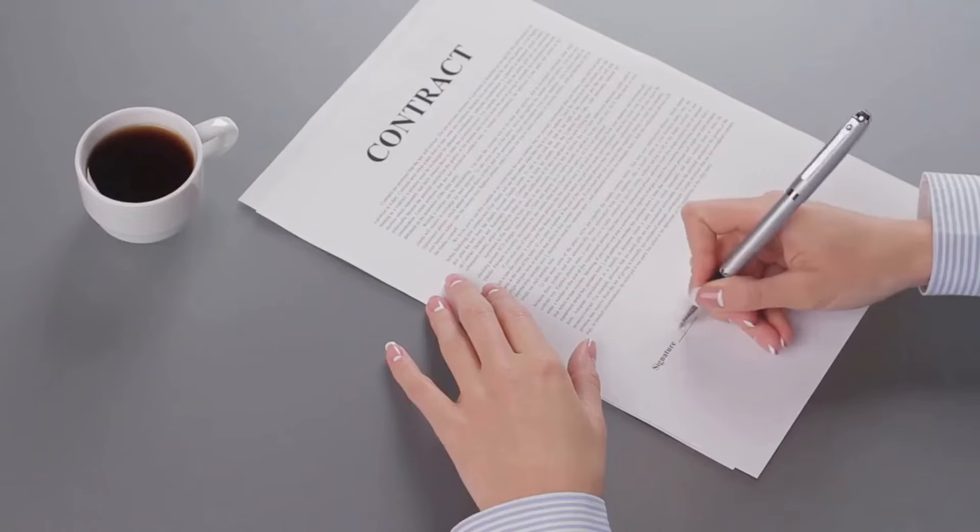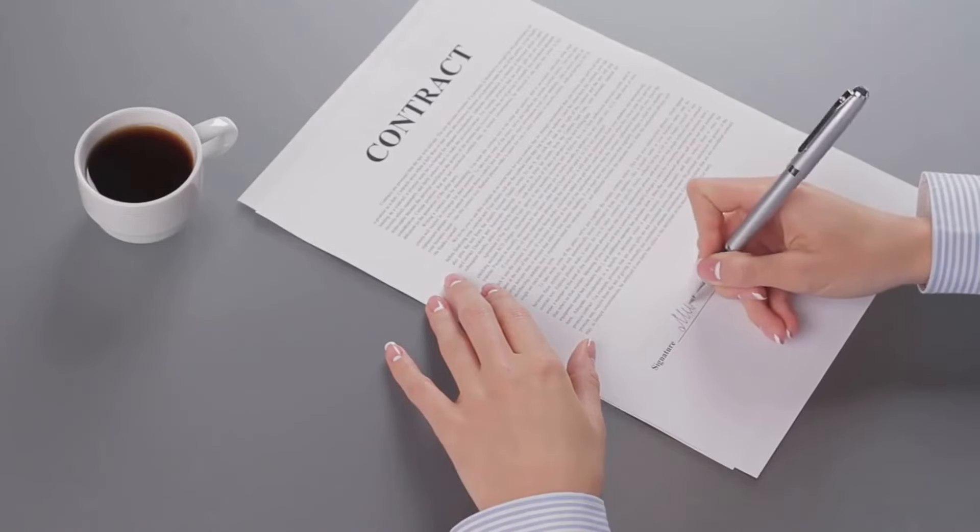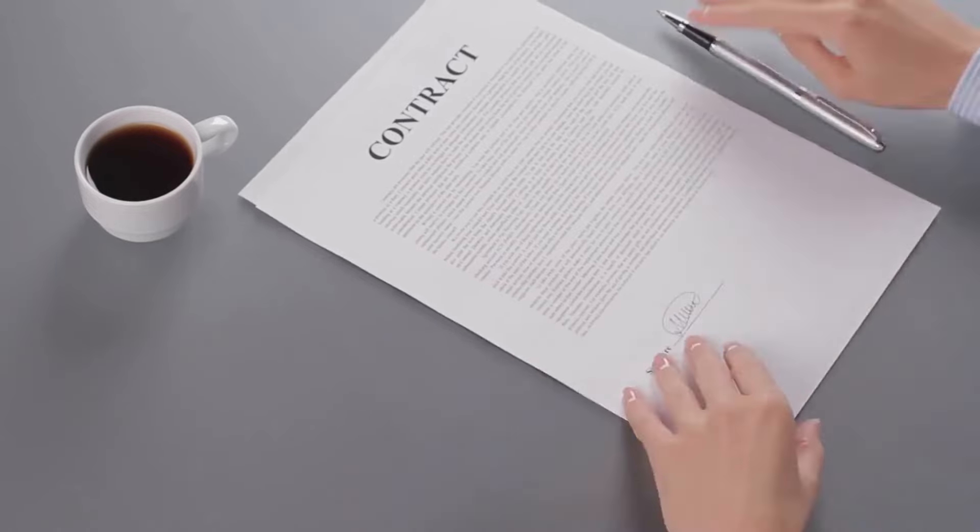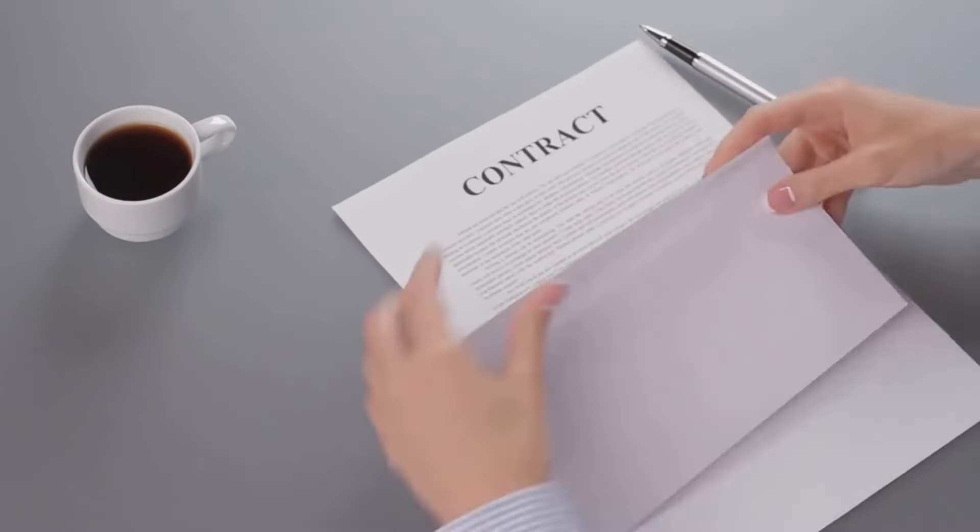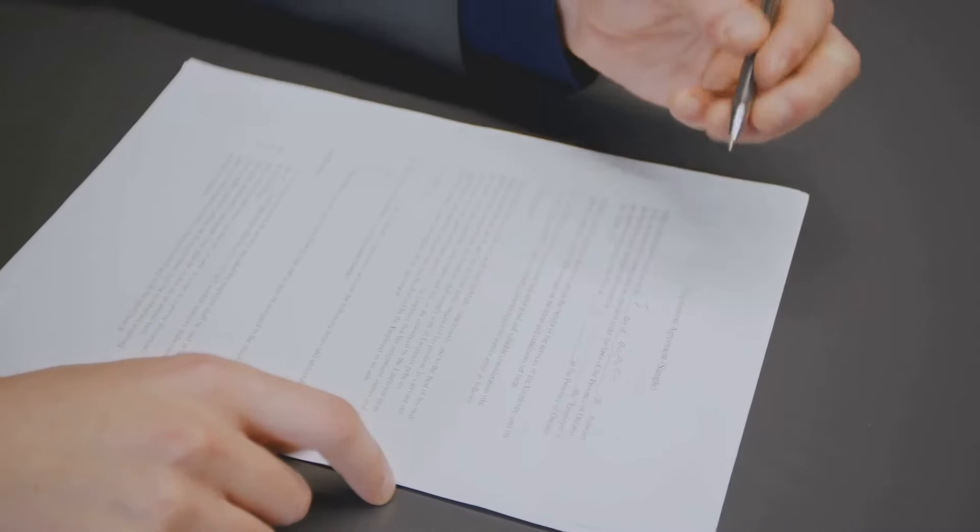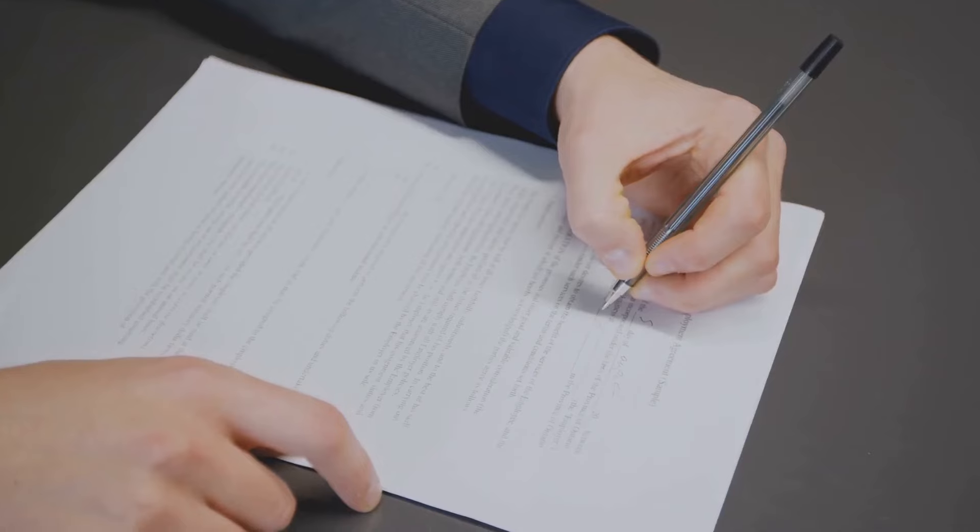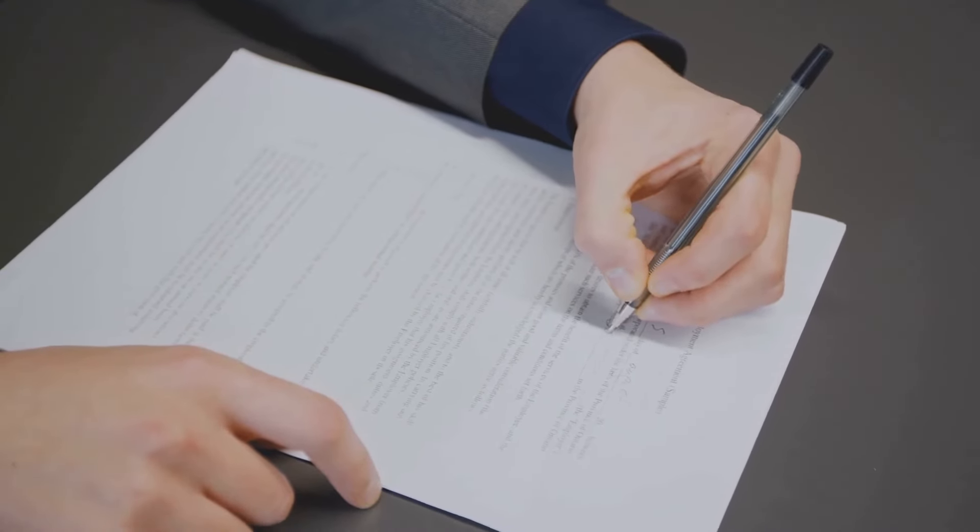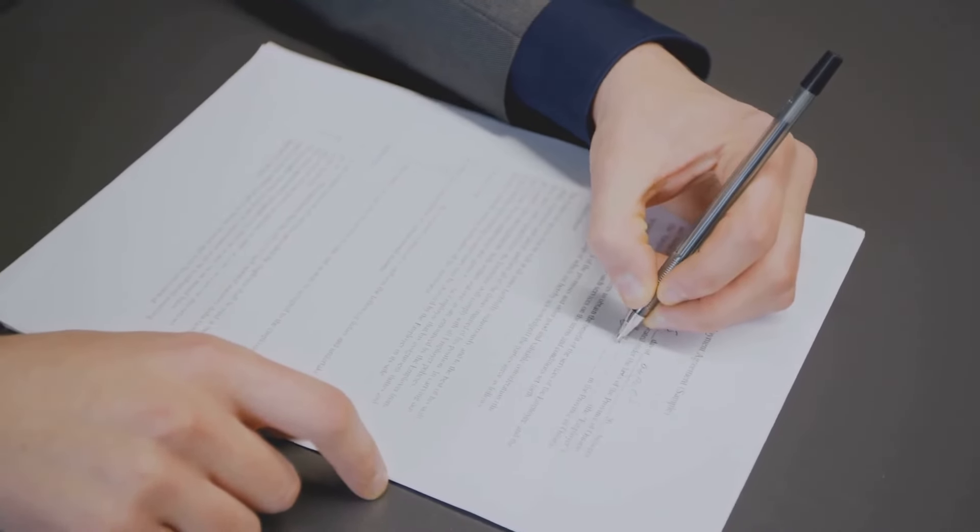To recap, securing a government contract as a therapist involves registering your business, obtaining necessary certifications, understanding the procurement process, submitting competitive bids, and delivering on your contracts. While the process may seem complex, breaking it down into these manageable steps can make it far less intimidating.